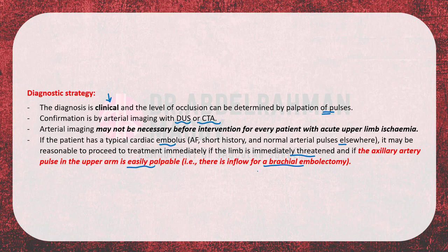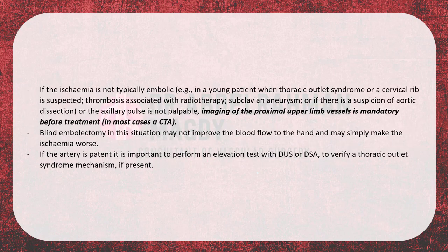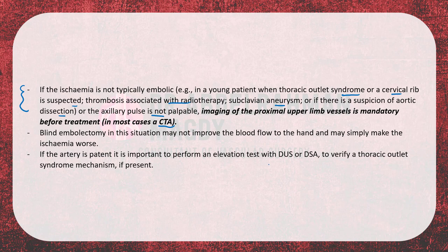If there is an obvious embolic etiology with a palpable axillary artery pulse in the upper arm, you can proceed immediately to embolectomy. However, in other cases — a young patient with thoracic outlet syndrome or cervical rib suspected, thrombosis associated with radiotherapy, subclavian aneurysm, suspicion of aortic dissection, or when axillary pulse is not palpable — imaging of the proximal upper limb vessels is mandatory before treatment, preferably by CT angiography. Blind embolectomy in this situation may not improve blood flow and may worsen ischemia. If the artery is patent, an elevation test with duplex ultrasound or digital subtraction angiography should be performed to verify a thoracic outlet syndrome mechanism.